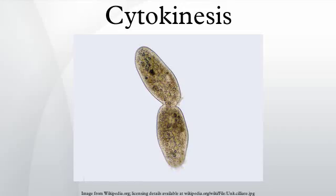Cytokinesis is the process during cell division in which the cytoplasm of a single eukaryotic cell is divided to form two daughter cells. It usually initiates during the early stages of mitosis, and sometimes meiosis, splitting a mitotic cell in two, to ensure that chromosome number is maintained from one generation to the next. After cytokinesis, two cells will be formed that are exact copies of the original cell, and each daughter cell is in the interphase portion of the cell cycle.